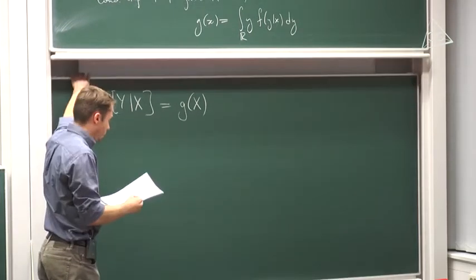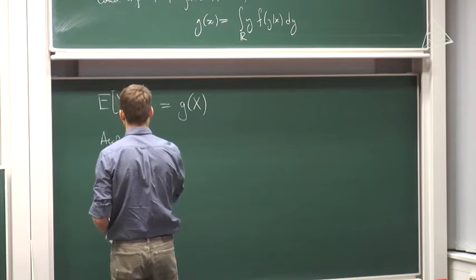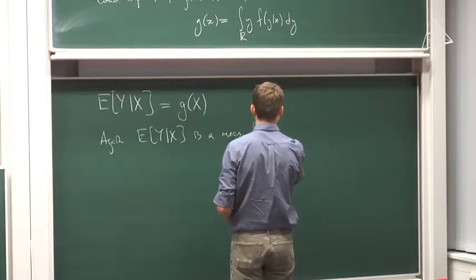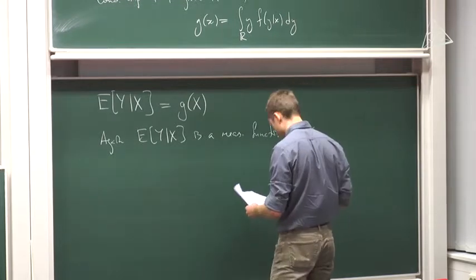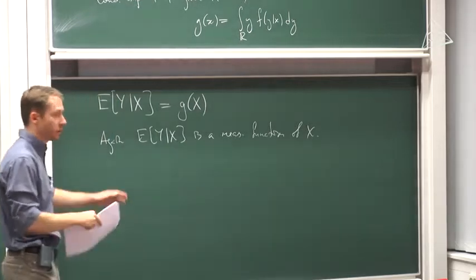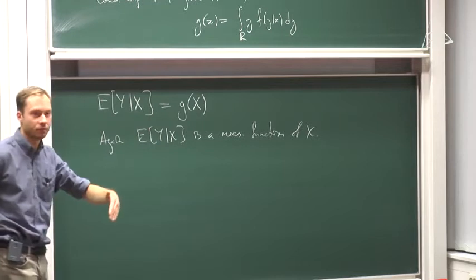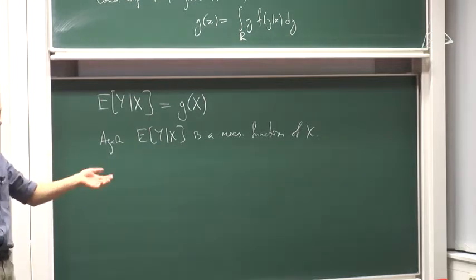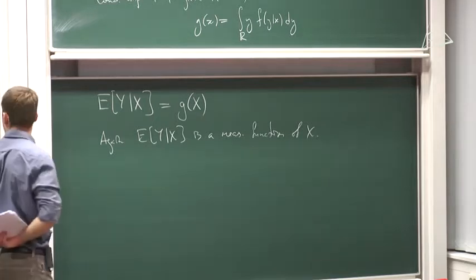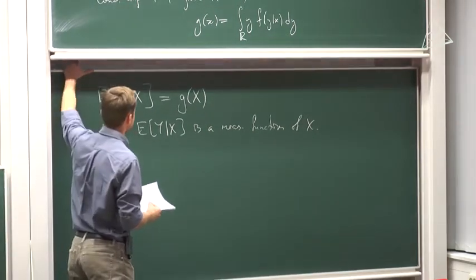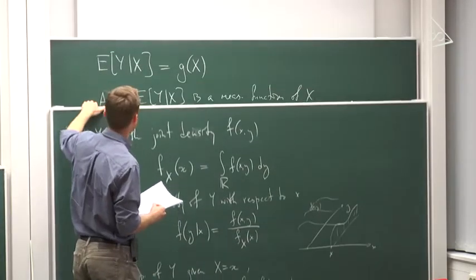So again, the conditional expectation of Y with respect to X is a measurable function of X. Notice the difference between the two examples: in the discrete example, it was important that the probability that X equals xₙ is positive. In this example, X is a random variable with a density, so the probability that X equals any particular number is just zero. In principle, we cannot use the same approach and condition on events of probability zero. These are two different approaches to conditional expectation.